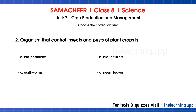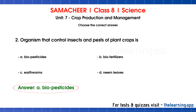Second question: the organism that controls insects and pests of plant crops is — options are A. biopesticides, B. biofertilizers, C. earthworm, D. neem leaves. The correct answer is option A, biopesticides. Biopesticides are used to control insects and pests using biological organisms.